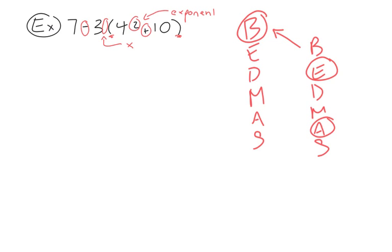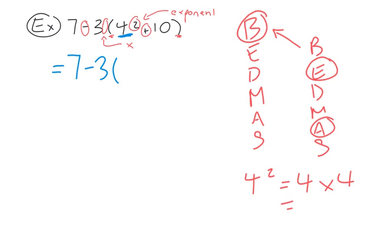Let's rewrite the question. We copy down whatever we are not touching, so 7 minus 3 stays exactly the same. Looking within the brackets, the first thing we evaluate is the exponent: 4 to the power of 2 is 4 times 4, which equals 16. The plus 10 stays exactly the same since we haven't touched it.